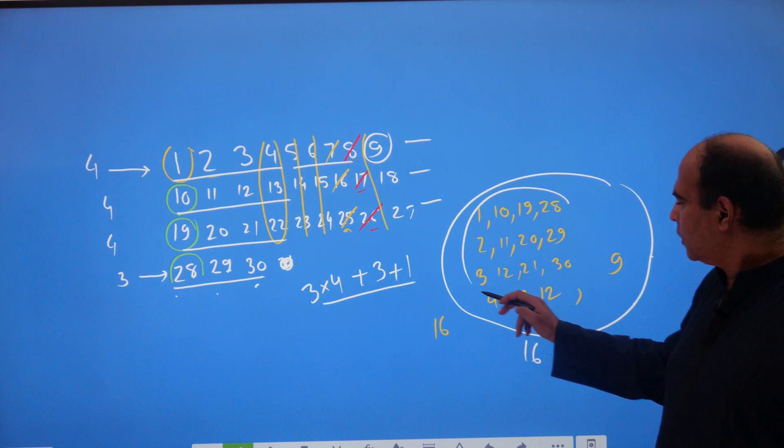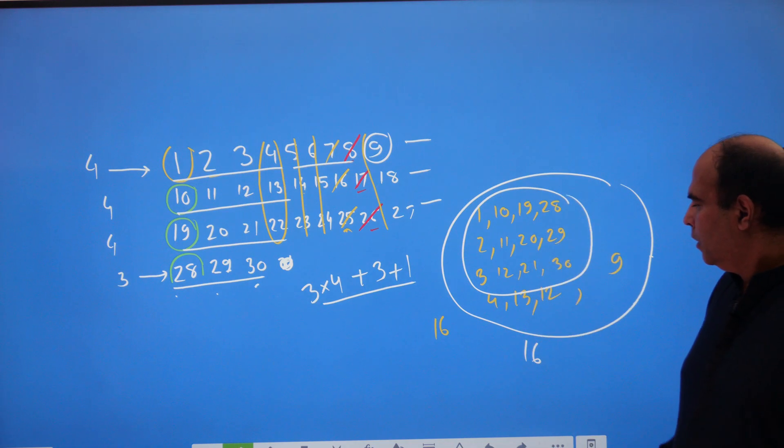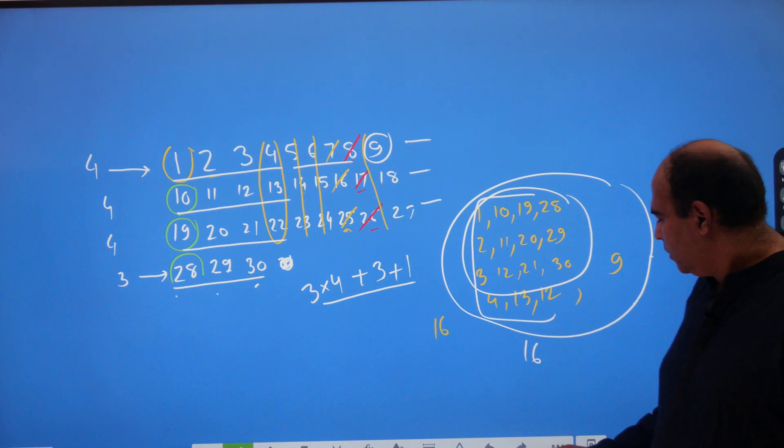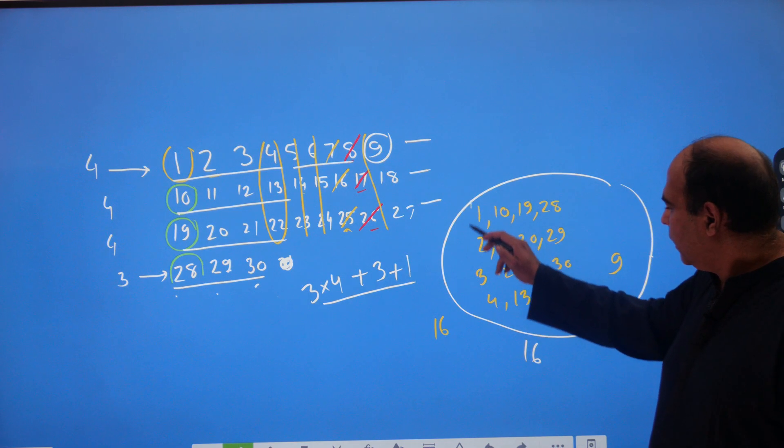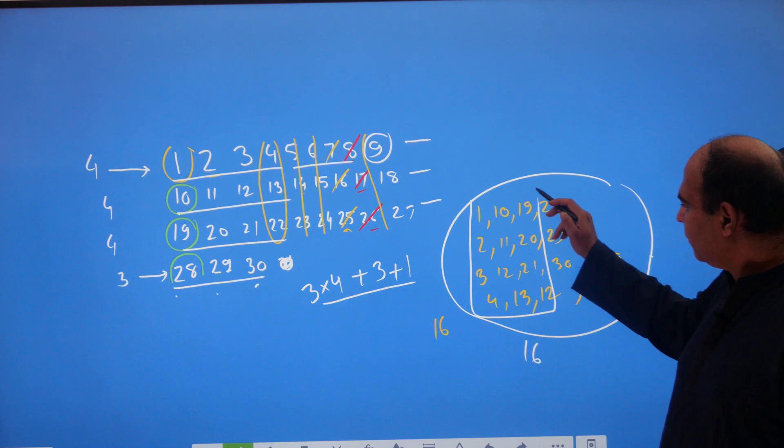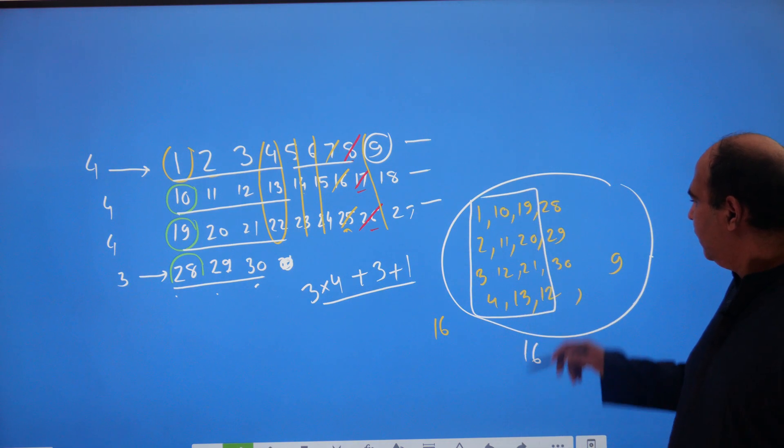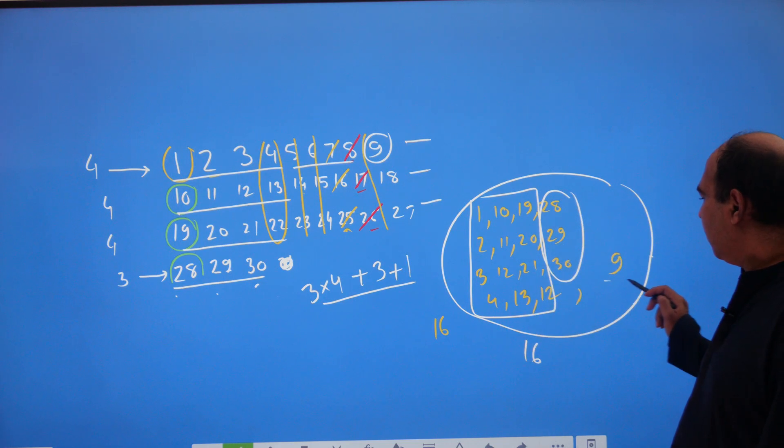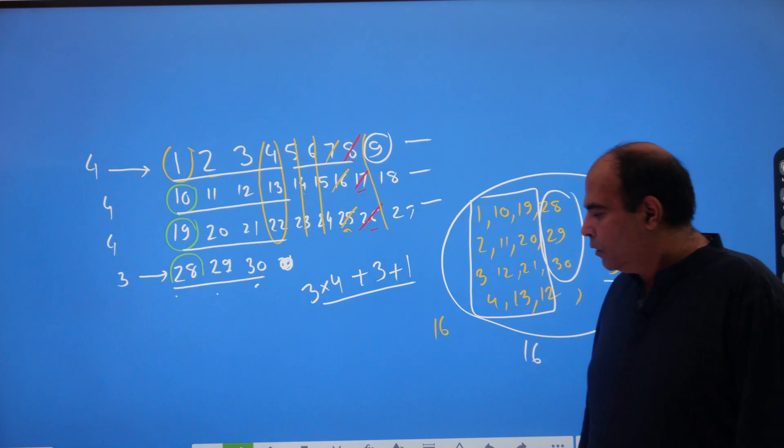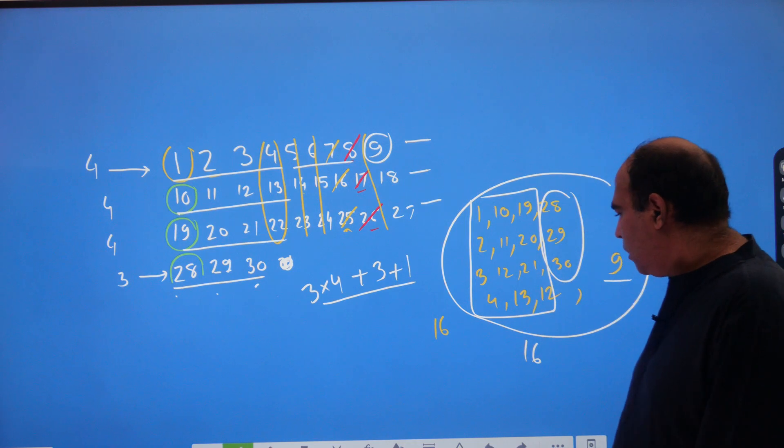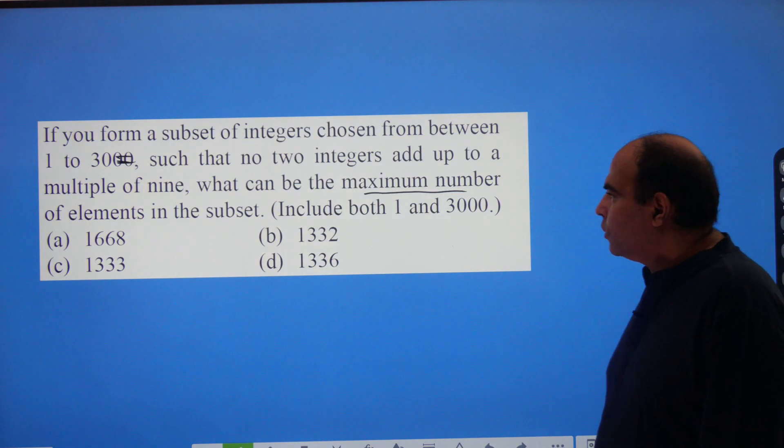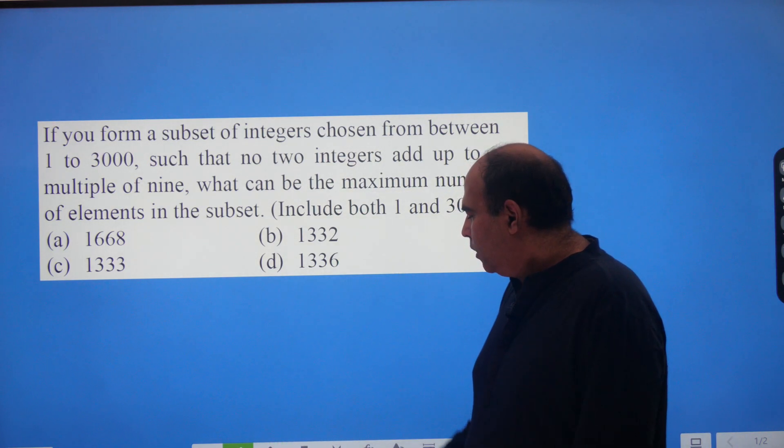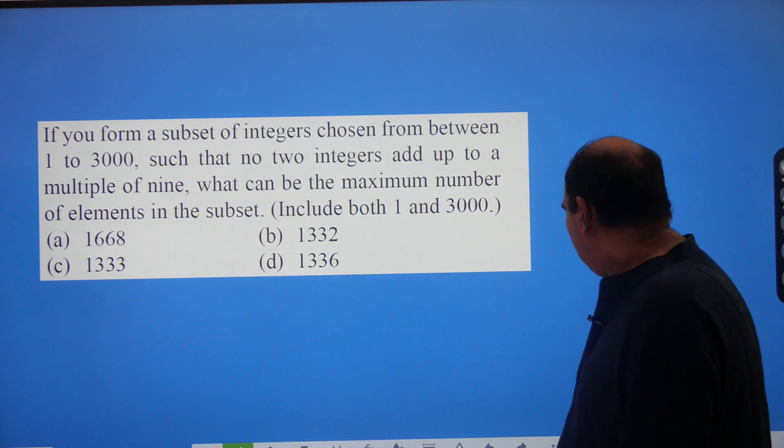So, 3 into 4 is getting mapped here. 3 into 4 is getting mapped here. Let me just rewrite that. 3 into 4 is getting mapped here. And the incomplete set is getting mapped here. And the 1 multiple of 9 is getting mapped here. So, now the only thing left is when I go back to this question, the question is not telling me 30, it is telling me 3000. So, the only thing I have to now do is how do I do this for 3000.